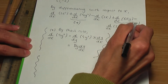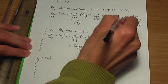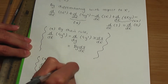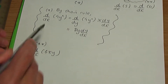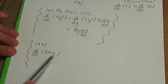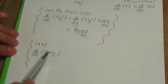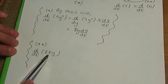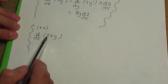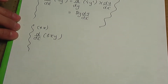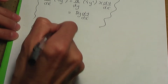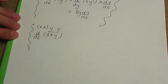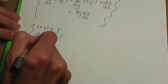Now for double star, we need d/dx of 6xy. Unlike the previous case, we have a term involving both x and y. To differentiate any term involving x and y with respect to x, we use the product or quotient rule. Here we have a product, so let's use the product rule, taking u = 6x and v = y.